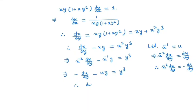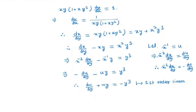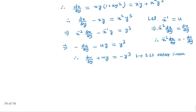By simplifying we get du/dy plus u times y equals minus y cubed. So here we get a first-order linear ODE, and we will solve this by the integrating factor method. I have already made a video on that — you can check that video, I will give the link in the description box.